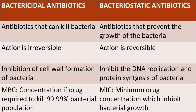In other words, MBC is the minimum concentration of a bactericidal agent required to kill 99.99% of bacteria. When considering bacteriostatic agents, the corresponding term is MIC — Minimum Inhibitory Concentration — which means the minimum drug concentration required to inhibit bacterial growth. So for bactericidal antibiotics we use MBC, and for bacteriostatic agents we use MIC.